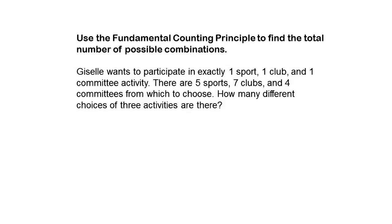Use the Fundamental Counting Principle to find the total number of possible combinations. Giselle wants to participate in exactly one sport, one club, and one committee activity. There are five sports, seven clubs, and seven committees from which to choose. How many different choices of three activities are there?